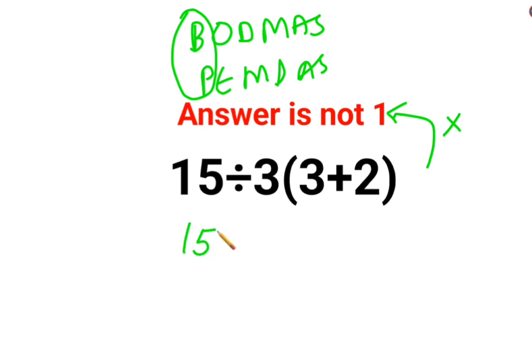So we will keep the rest as it is. 15 divided by 3, we will keep it as it is. And since there is no sign between this 3 and the bracket, it means it is supposed to be multiplication. And 3 plus 2 gets you 5.